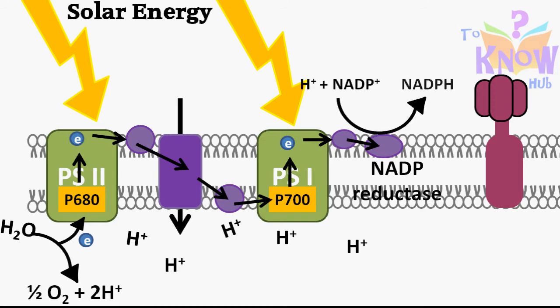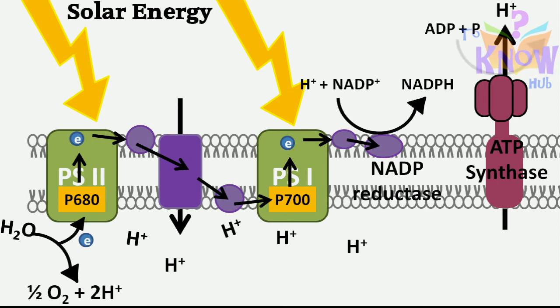The electron reaches the NADP+ reductase complex, where it is used to reduce NADP+ to NADPH. This NADPH is very important as it plays a primary role in reducing carbon dioxide into glucose in the next stage of photosynthesis. Right now, hydrogen ion density is very high inside the thylakoid — some ions were pumped in, some were supplied by water. So these ions flow outside through the ATP synthase complex, which combines ADP with inorganic phosphate to produce ATP.